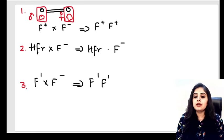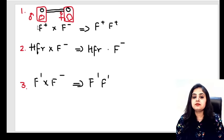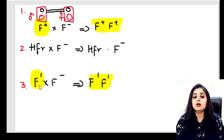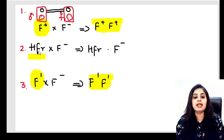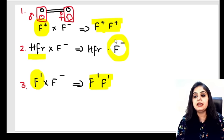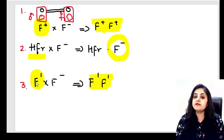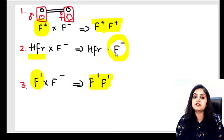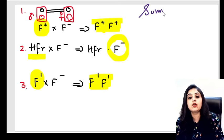Let's recap conjugation for MCQ purposes. F+ male conjugating with F− female → both become F+. F′ male conjugating with F− female → both become F′. HFR conjugating with F− female → male stays HFR, female stays F−. HFR cannot make the female F positive. That's your final summary of the conjugation scenarios they can ask in the paper.